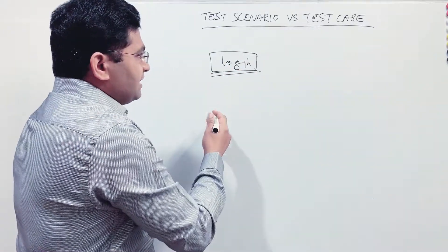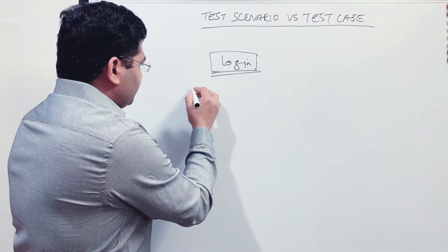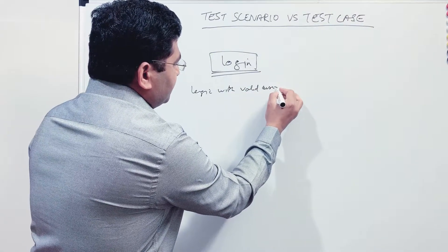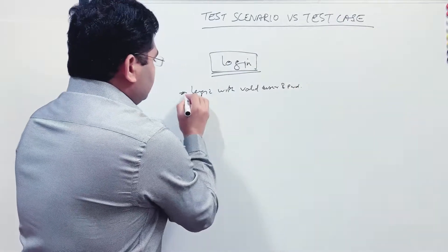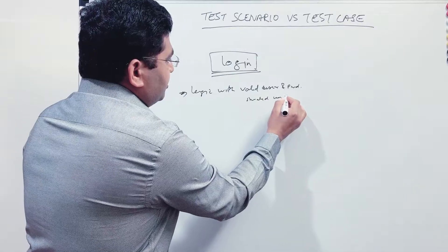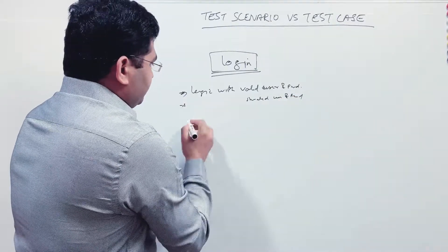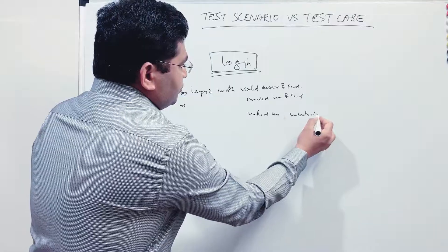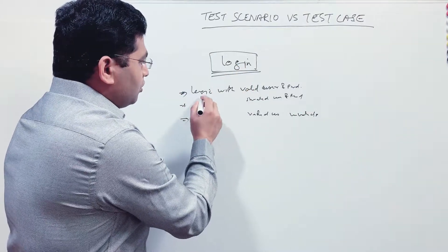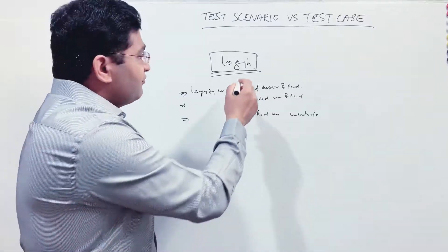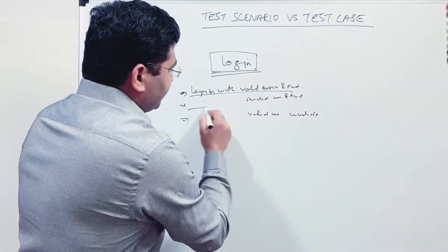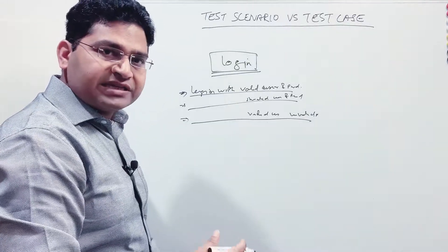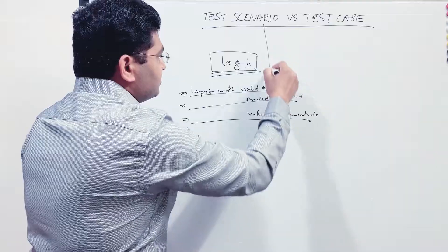For example, in the login functionality: login with valid user and password, login with invalid user and password, login with valid user and invalid password. These are just one-liner descriptions of what all scenarios you are going to cover as part of the login functionality. When we write high-level, one-liner descriptions of any functionality or what we are going to test, that is a test scenario.